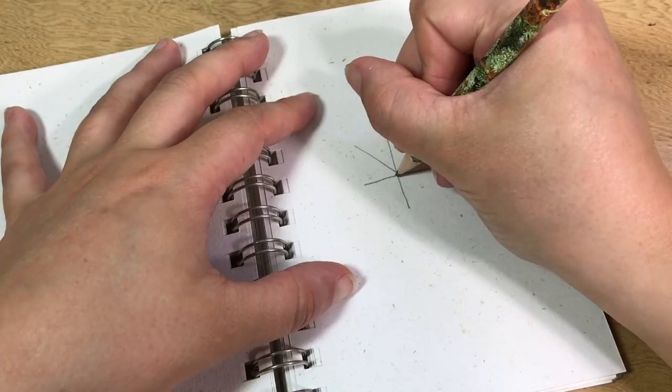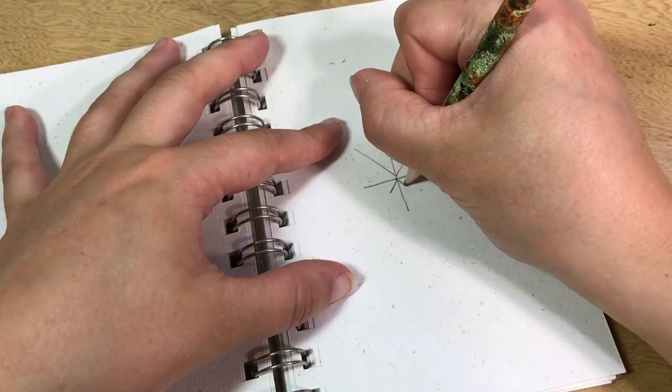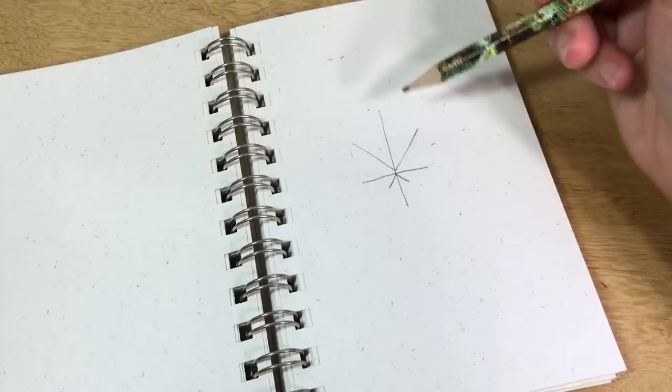got to draw the two little lines in like a V—boop and boop. There we go, so that's our general pot leaf shape, but we aren't done yet. We got to draw the other part of